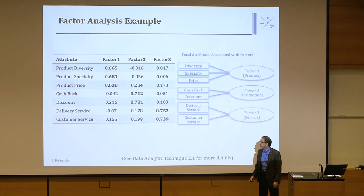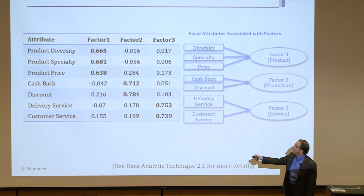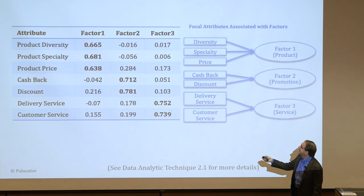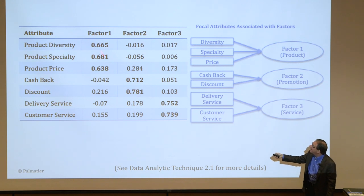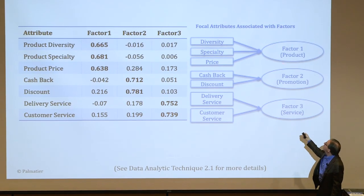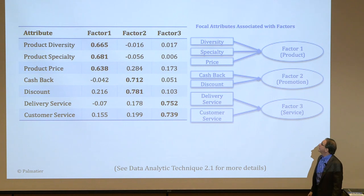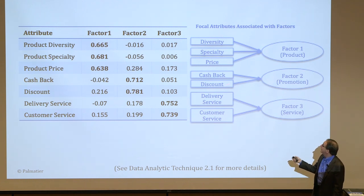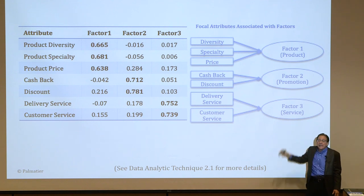Here's an example from the book — DAT 2.1. We had seven attributes and ran factor analysis; the output shows factor one has high loadings on diversity, specialty, and price — we call that the 'product factor.' Factor two is about cashback and discount — high on those two, low elsewhere — this is about promotion. The last two, delivery service and customer service, are about service. We went from seven down to three latent factors. When we run cluster analysis, we'll use these three factors.